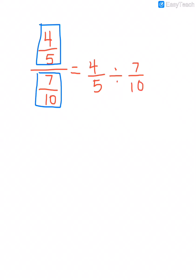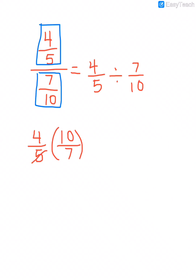We cannot divide fractions — we have to multiply by the reciprocal. So in order to simplify this, we rewrite it as 4 fifths times 10 over 7. Then we can either multiply straight across, or reduce and then multiply, which is easiest. If we reduce first, 5 will go into 10 two times, and then we multiply 4 times 2, which is 8 over 7. That would be our answer.